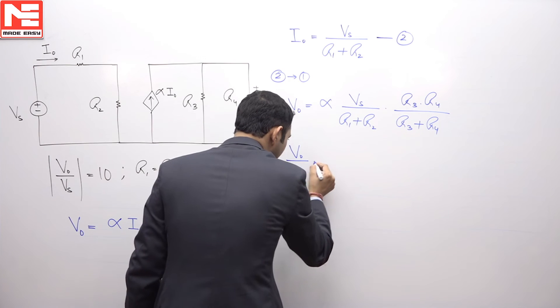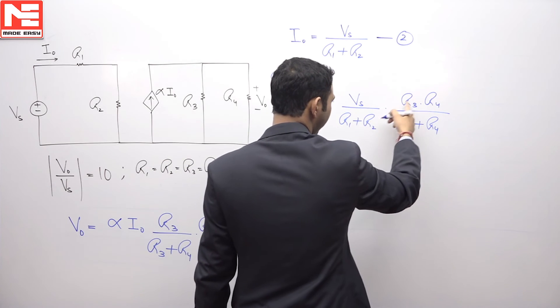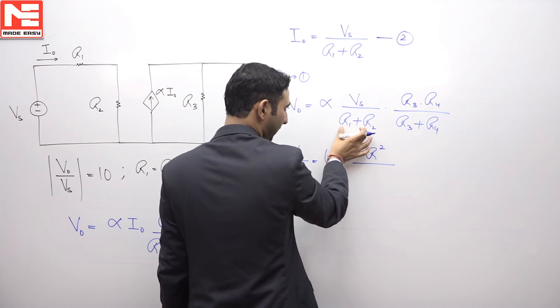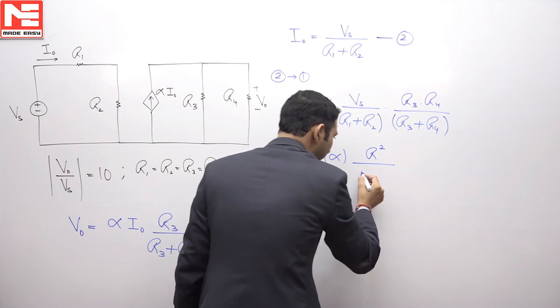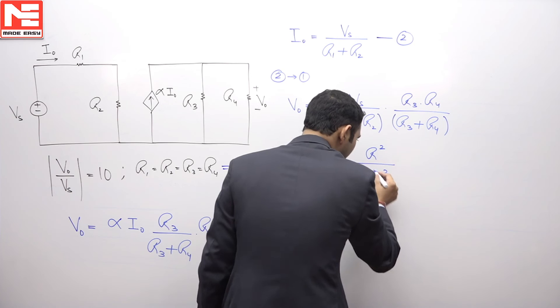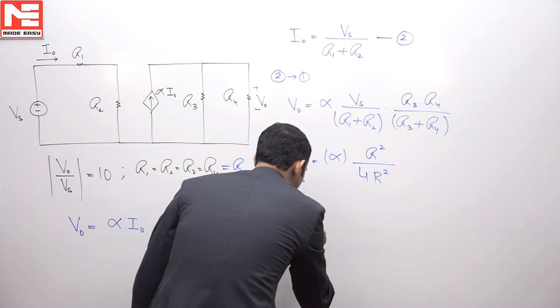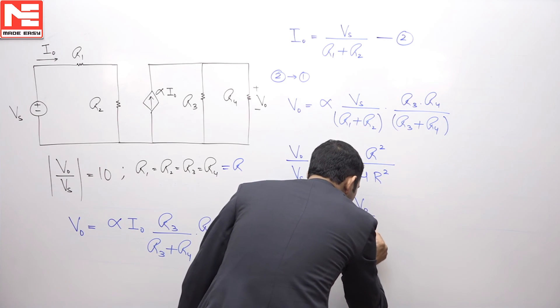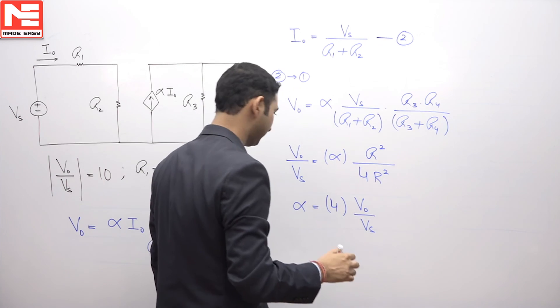V naught upon Vs, this is equal to alpha multiplied by R3 into R4, this will be R square. R1 plus R2 that is R plus R2 R multiplied by this value 2 R, 2 R into 2 R it will be 4 R square. So R square R square will get cancelled, you can see alpha is coming equal to 4 times V naught by Vs, that is I am taking this 4 on this side. So alpha will be 4 times V naught by Vs.